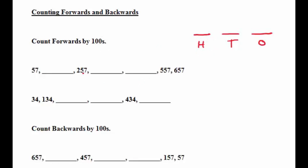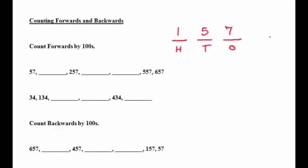Everything else is going to stay exactly the same. So if we start with 57, we're going to add 100 to that, and that's going to give us 157. Because 100 plus 57 is equal to 157.